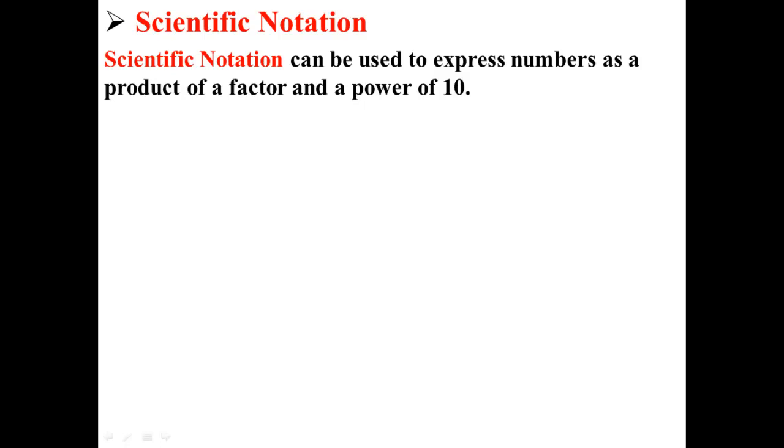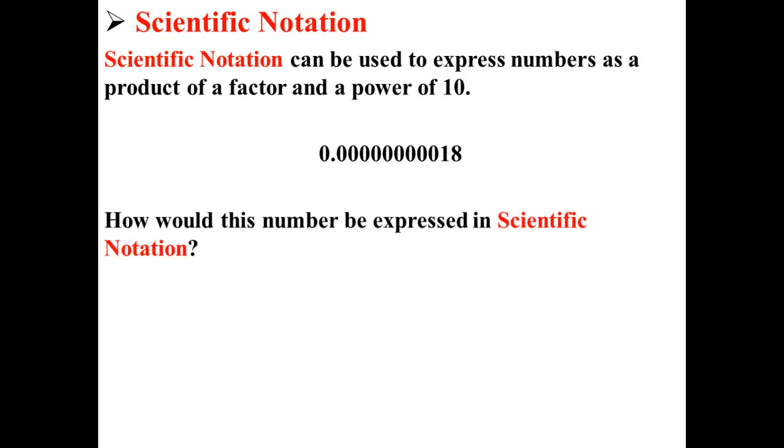Scientific notation can be used to express numbers as a product of a factor and a power of 10. For example, here we have a number 0.00000018. That's kind of hard to say and it's kind of hard to write, so let's write it in scientific notation. How would this number be expressed in scientific notation?